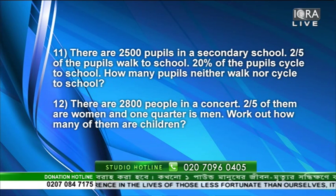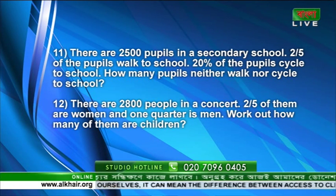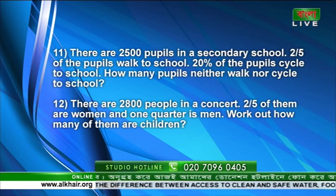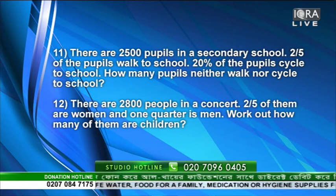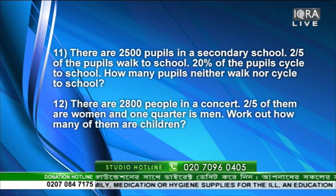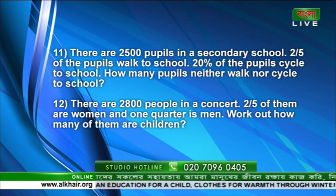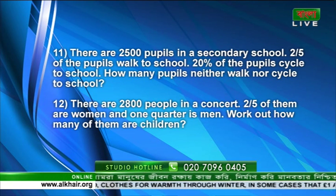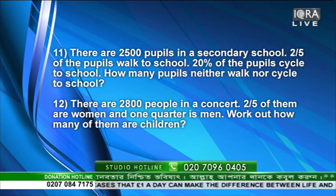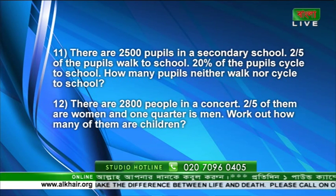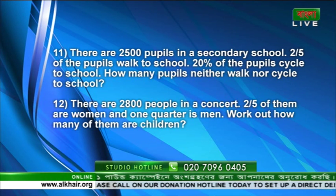There are three different ways to work it out. First, work out what fraction is left after walking and cycling. Walking is two-fifths; 20 percent as a fraction is one-fifth. Two-fifths plus one-fifth equals three-fifths altogether. So the remaining two-fifths neither walk nor cycle. Two-fifths of 2500: 2500 divided by 5 is 500, multiplied by 2 gives 1000. So 1000 pupils neither walk nor cycle.